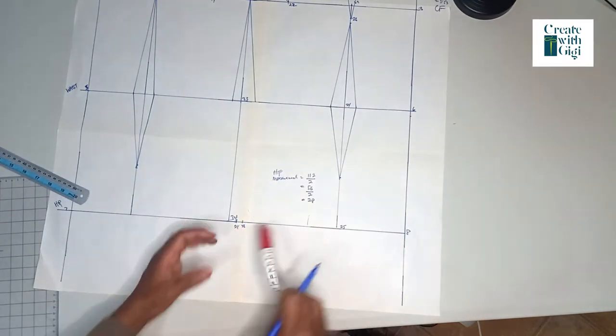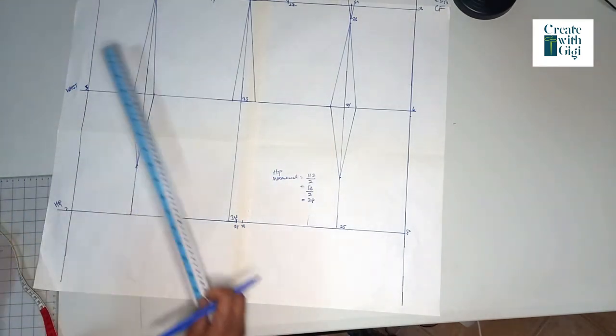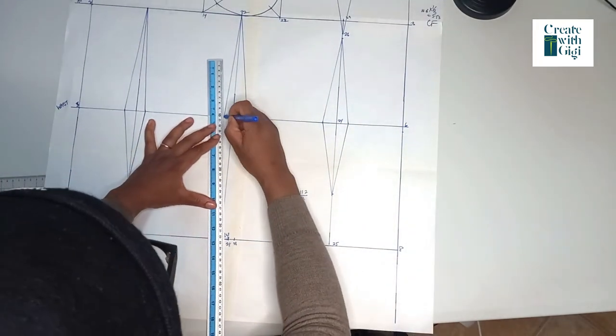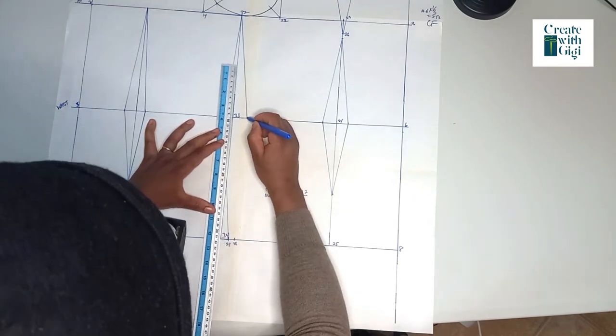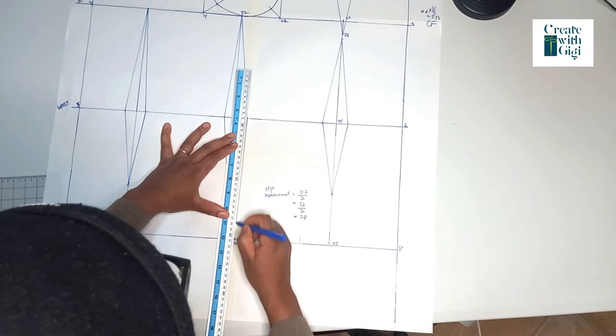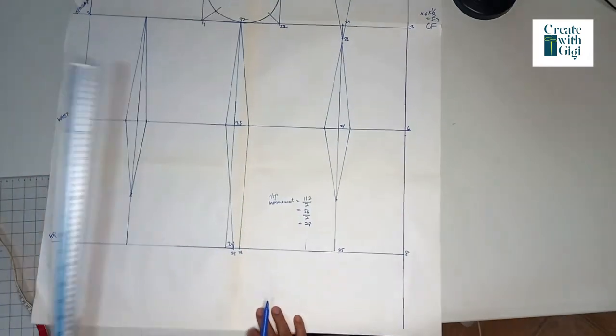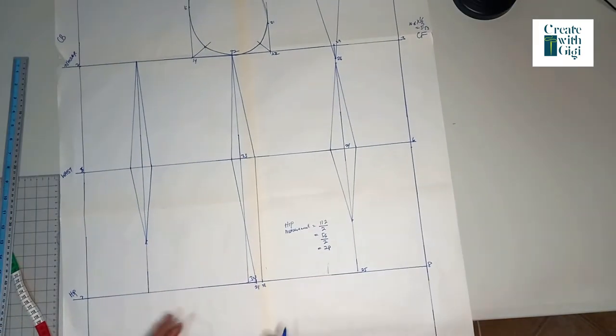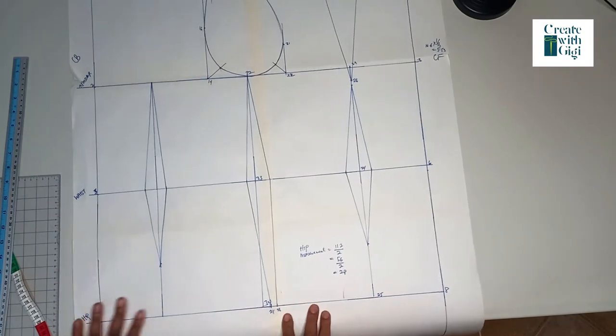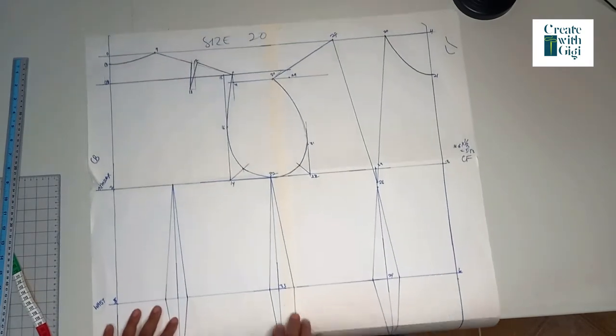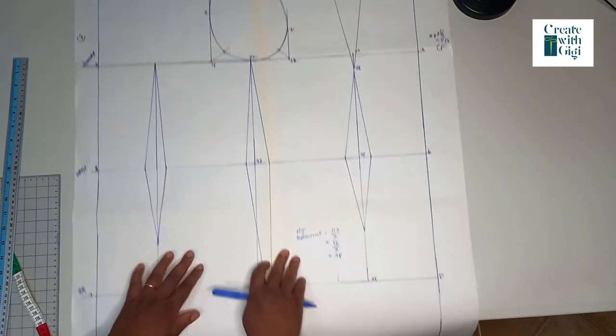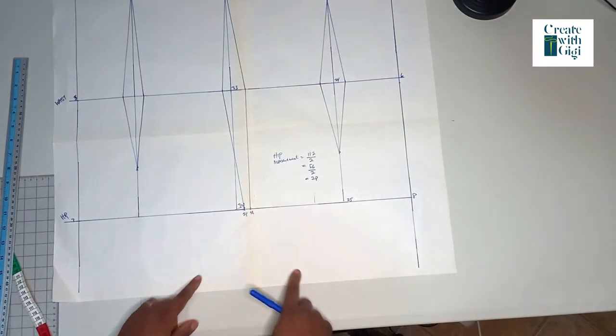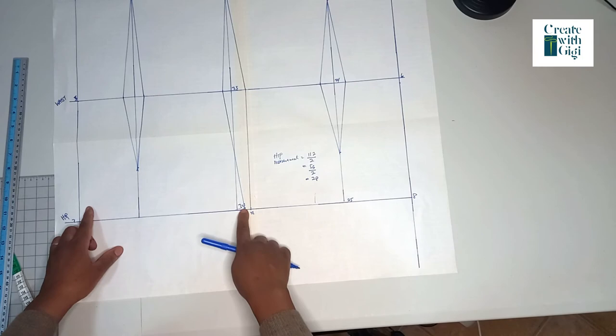You can do that with whatever measurements you get. Then draw the dart legs down to meet this point. Now, some people might tell you to divide the block into two. The reason I do mine like this is because I want the hip to be really fitted without that extra centimeter ease. You can do yours that way, but this is also fine.